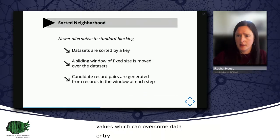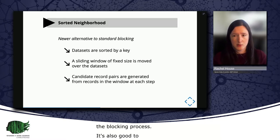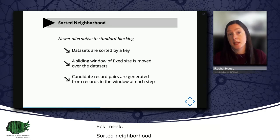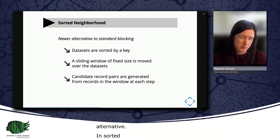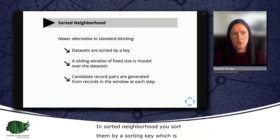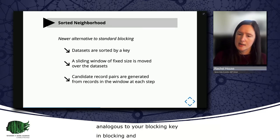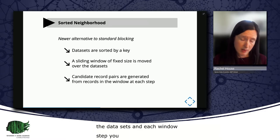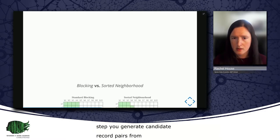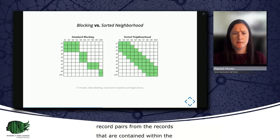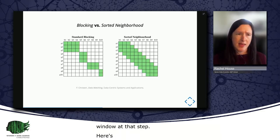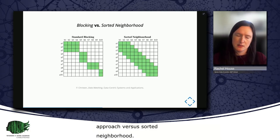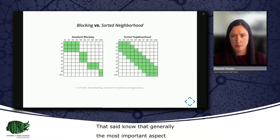It's also good to know that blocking is not the only indexing technique. Sorted Neighborhood is a newer alternative to conventional blocking. In Sorted Neighborhood, you sort your datasets by a sorting key, which is analogous to your blocking key in blocking. And then you move a sliding window of fixed size over the datasets. And at each window step, you generate candidate record pairs from the records that are contained within the window at that step. Here's a visual depiction of the differences between a blocking approach versus Sorted Neighborhood. That said, know that generally, the most important aspect of the indexing step is not which technique you use, but the definition of your blocking or sorting keys.